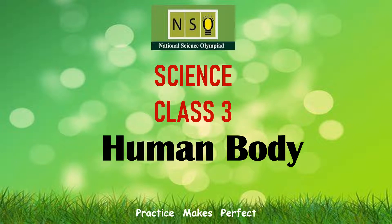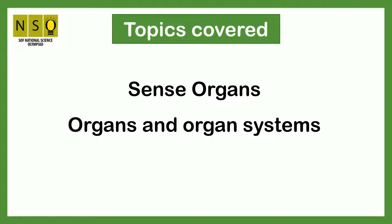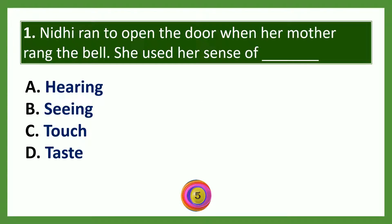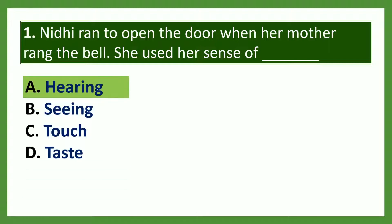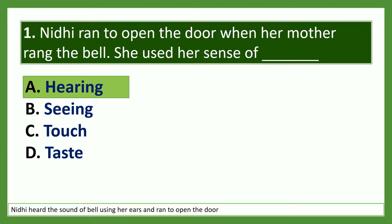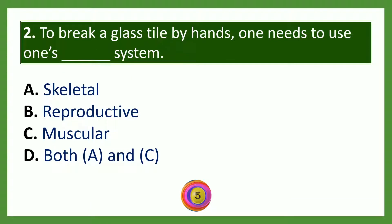Science for Class 3: Human Body. Topics covered are sense organs, organs, and organ systems. Nidhi ran to open the door when her mother rang the bell. She used her sense of dash — the options are hearing, seeing, touch, taste. The answer is hearing. Nidhi heard the sound of the bell using her ears and ran to open the door.